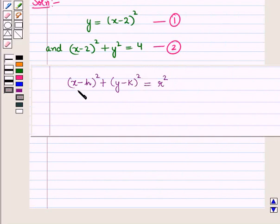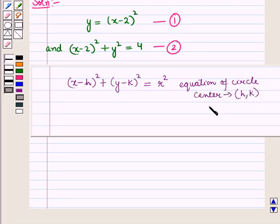Now the second equation. The second equation is of the form (x-h)² + (y-k)² = r², which is the equation of a circle with center (h,k) and radius r.